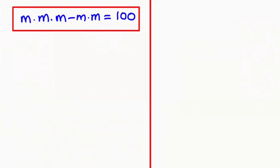Hi everyone. In this video I'm going to solve this nice algebra equation. The equation we have is m times m times m minus m times m equals 200, where we need to find out the value of m. So let's just start the solution.